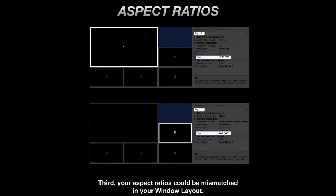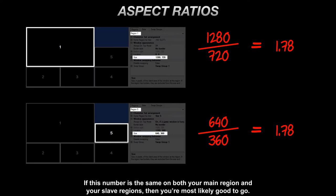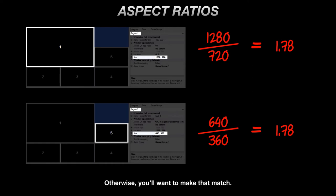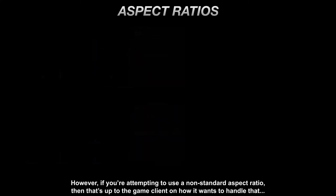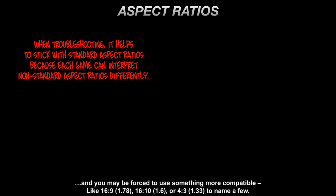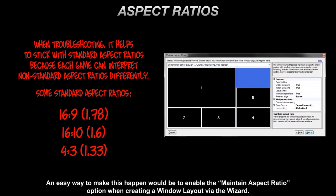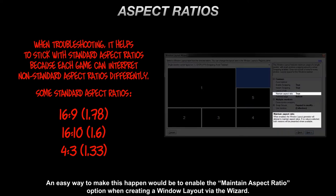Third, your aspect ratios could be mismatched in your window layout. You can figure this out by dividing the width by the height of your selected resolution in pixels. If this number is the same on both your main region and your slave regions, you're most likely good to go; otherwise, you'll want to make them match. If you're attempting to use a non-standard aspect ratio, it's up to the game client how it handles that, and you may be forced to use something more compatible like 16:9, 16:10, or 4:3. An easy way to make this happen is to enable the maintain aspect ratio option when creating a window layout via the wizard.